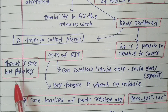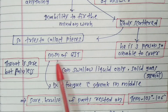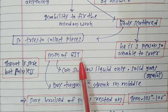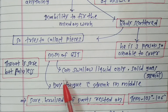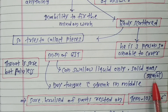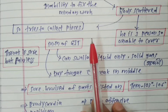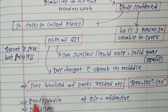Baptisia acts on the mucous membranes of the GIT. The patient can swallow only liquids — solid food causes gagging. There is also a dry tongue with a streak in the middle, which is another characteristic feature.